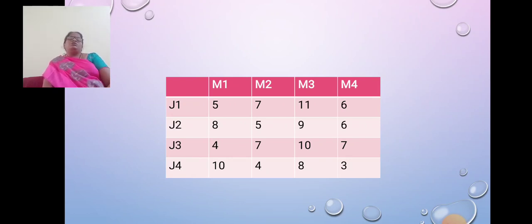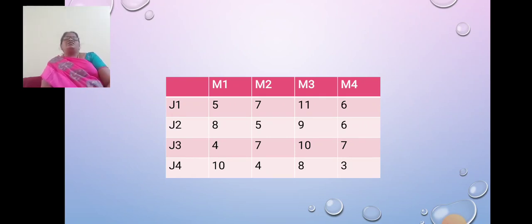First, we need to use row reduction. In the first row, the minimum value is 5. We should subtract the minimum value from all the values in the first row. In the second row, the minimum value is 5. We need to subtract the minimum value from the other values.